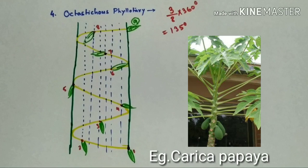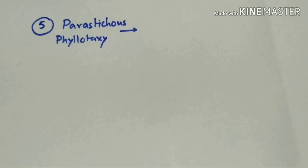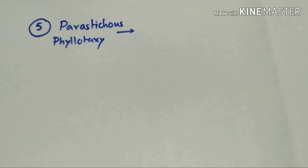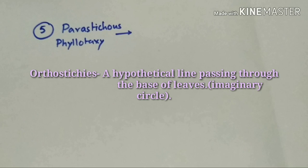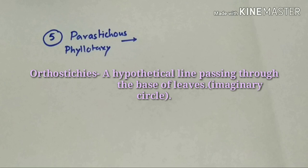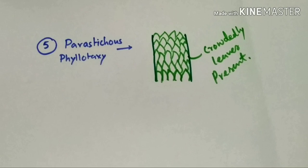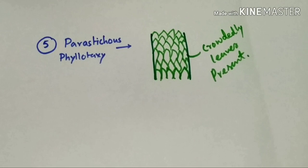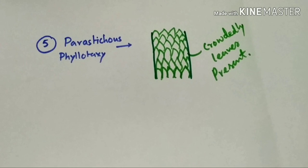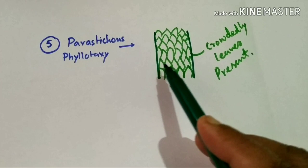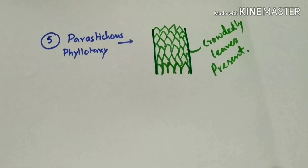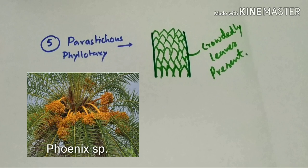The next type of phyllotaxy is Parastichous phyllotaxy. In this case, orthostichies or circles are not possible to count, as leaves are crowdedly situated and internodes are very short. From a node, a huge number of leaves arise, so we cannot count the circles or orthostichies. Phoenix is an example of this type of phyllotaxy.